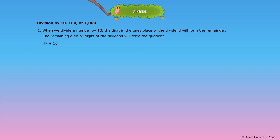47 divided by 10. In 47, the ones digit is 7, so it is the remainder. The remaining digit of the number is 4. It is the quotient. Quotient is equal to 4 and remainder is equal to 7.